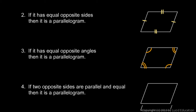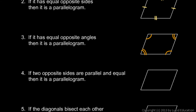Statement number four: if two opposite sides are both parallel and equal, then it is a parallelogram. Let's take one pair of opposite sides and mark them as parallel with a little triangular marking, and also mark them as equal. If I have one side both parallel and equal to the opposite side, then it is a parallelogram, and I will prove that also.